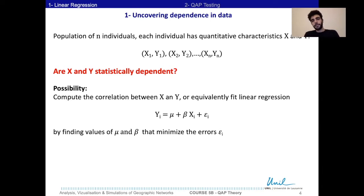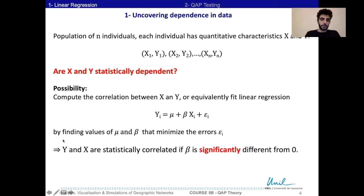A way to check this is to compute the correlation between X and Y. Or equivalently, we could fit the following linear regression. Once we find the values of μ and β, we could test if the value of β is significantly different from 0, which would mean that X and Y are statistically correlated.